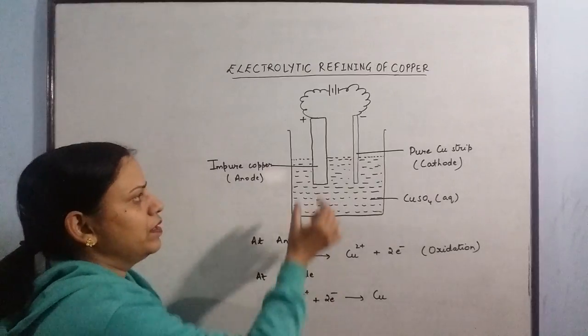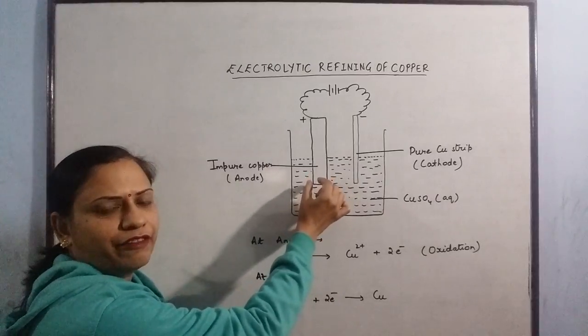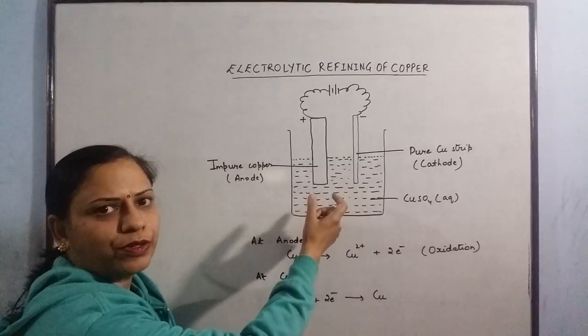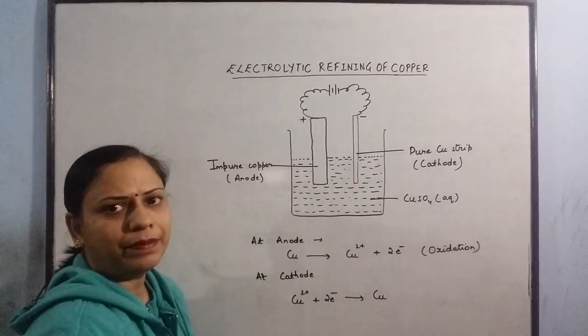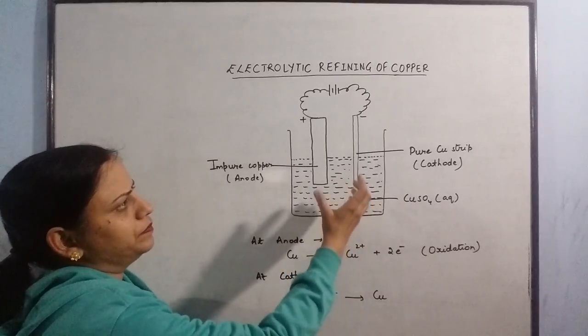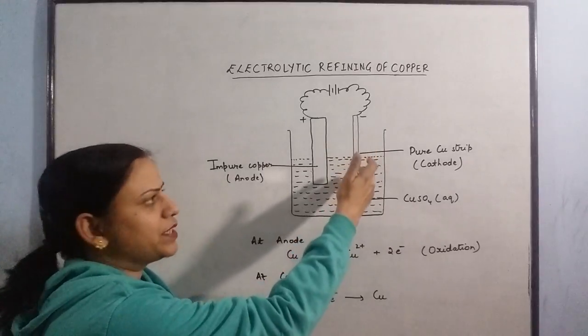After some time, this rod will become thinner. Finally, it may finish also and while this rod will become thicker and the pure copper is being deposited at the cathode.